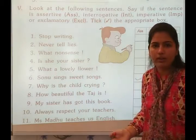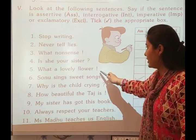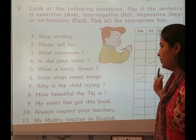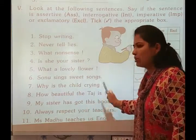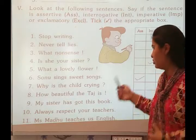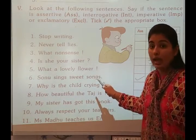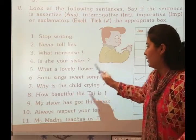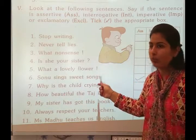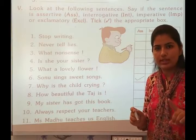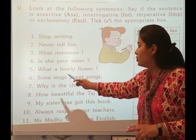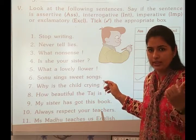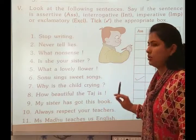Number five: 'What a lovely fluff!' — it expresses sudden surprise, so this is called an exclamatory sentence. Number six: 'Sonu sings sweet songs' — this is just a statement, so it is called an assertive sentence. Remember, an assertive sentence can be affirmative or negative. If 'not' is added — 'Sonu doesn't sing sweet songs' — it becomes a negative assertive sentence.